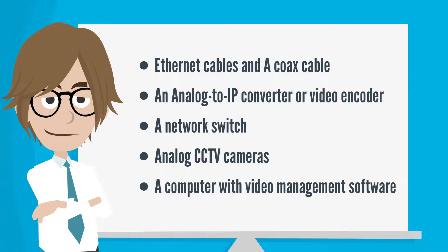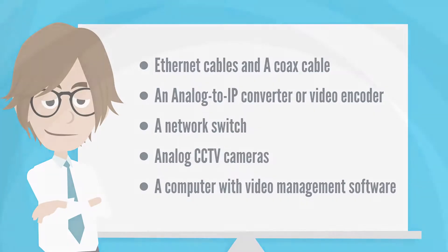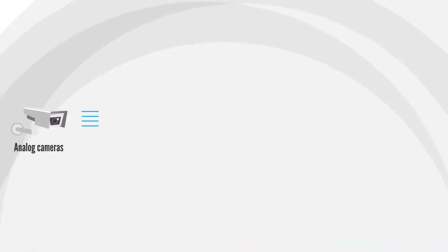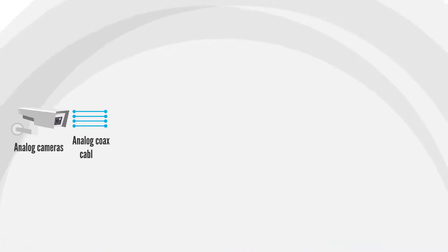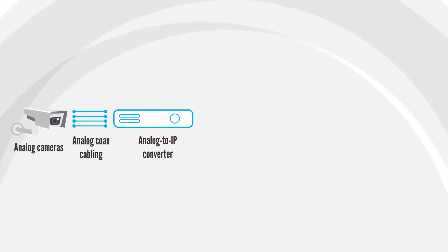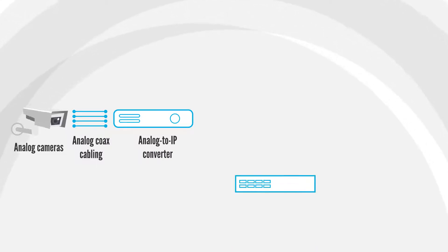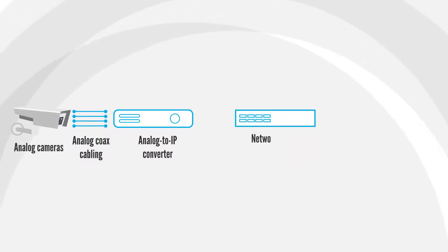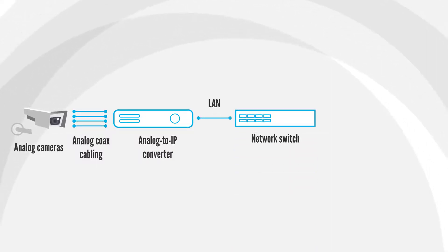Ok, let's do this. Step 1: Using the coax cable to connect the analog-to-IP converter and the analog camera. Step 2: Connecting the analog-to-IP video converter to the network switch with an Ethernet cable.